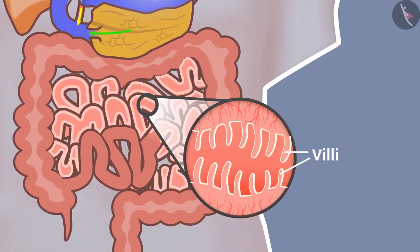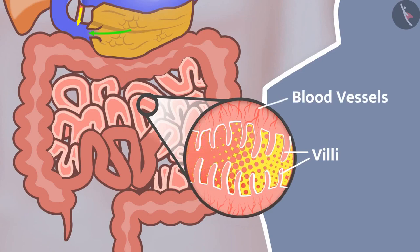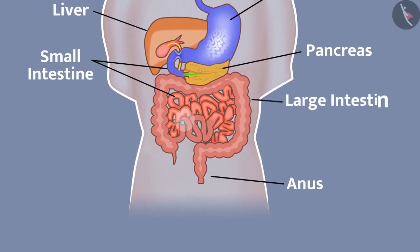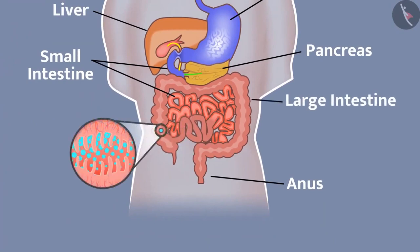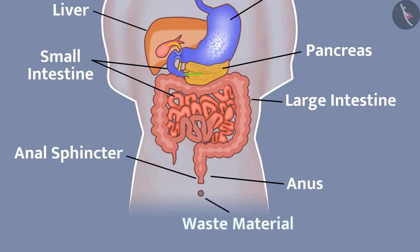These villi increase the surface area of absorption. In the villi, there are abundant blood vessels which absorb food and carry it to each cell of the body. After this, the undigested food enters the large intestine, where villi absorb water from the undigested material. Waste material is removed from the body by the anus, and the anal sphincter regulates the exit of waste material.